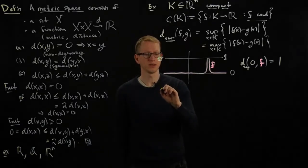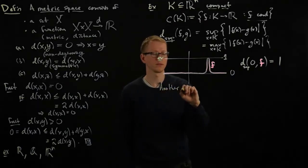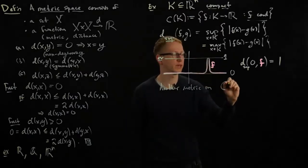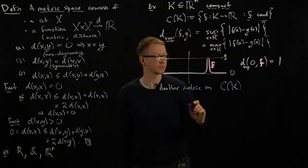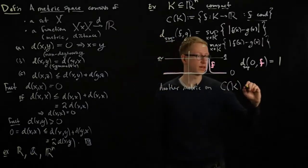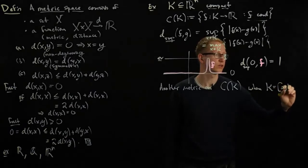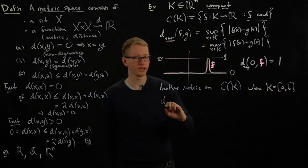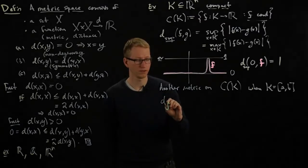So because of this, we can define another metric on this same space, continuous functions on a compact domain, or specifically when K is of the form, let's say, in a closed interval from a to b. We can define this integral distance